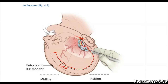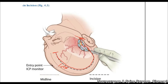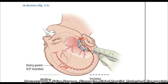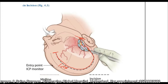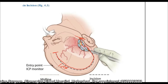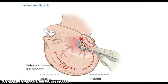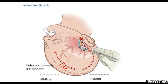One more important decision is what is the posterior extent of the incision. In majority of cases, the incision should extend posteriorly to encompass and incorporate the parietal eminence. In cases of trauma or traumatic brain injury, the flap should extend as posterior as possible to include the parietal eminence.